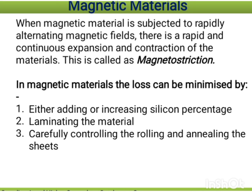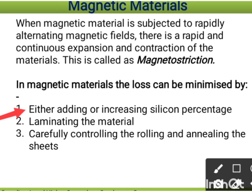Magnetic losses — including hysteresis loss and eddy current losses — can be minimized, though not completely eliminated. Methods include: first, adding or increasing the silicon percentage; second, laminating the material, which increases resistance and thereby reduces eddy currents; and third, carefully controlling the rolling and annealing of the sheet.